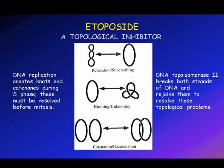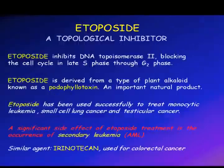Etoposide is a topoisomerase inhibitor. When replicating DNA, knots and catenanes develop, and etoposide interferes with the enzyme that resolves them. It is useful in leukemias, small cell lung cancer, and testicular cancer, but a significant side effect is the occurrence of secondary leukemias. Irinotecan is a similar agent used for colorectal cancer.